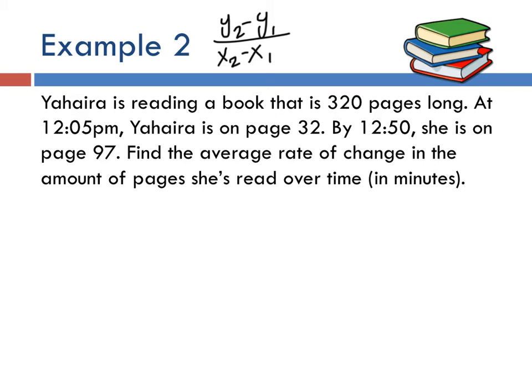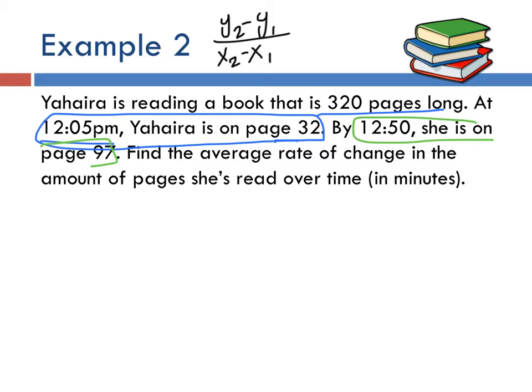Alright so in this next example, it's a very similar example. Yahaira is reading a book that is three hundred and twenty pages long. Let me underline that because I always like to note what we have. At twelve oh five p.m. Yahaira is on page thirty two. So at twelve fifty she's on page ninety seven.